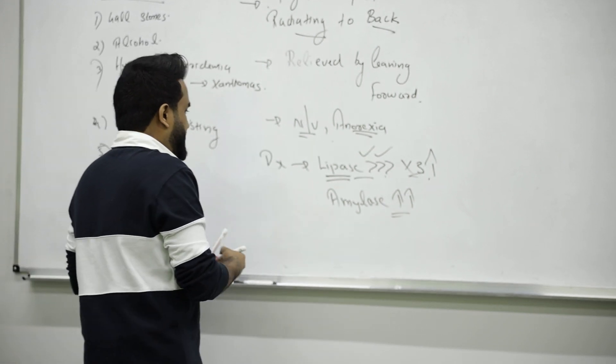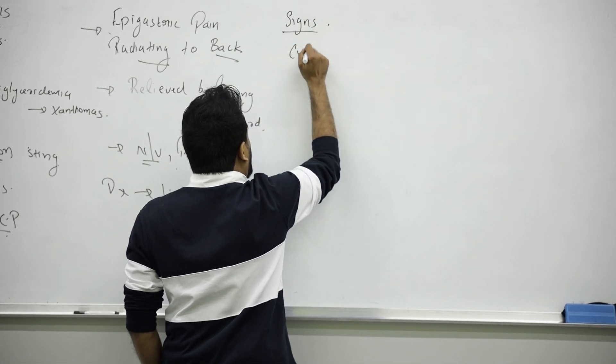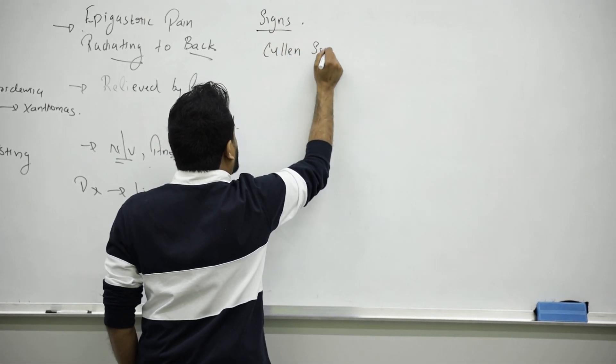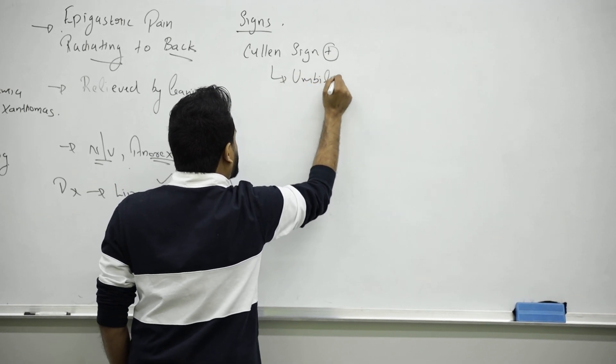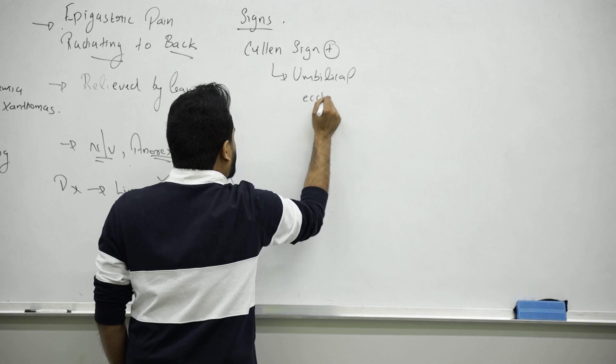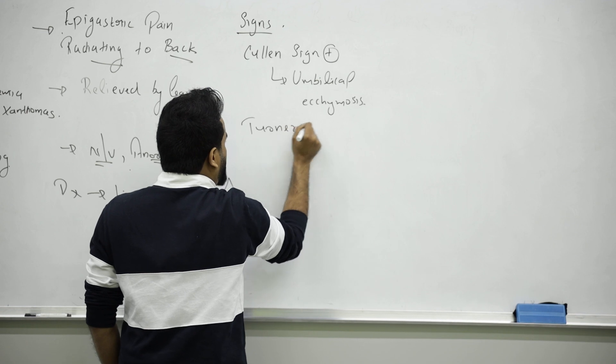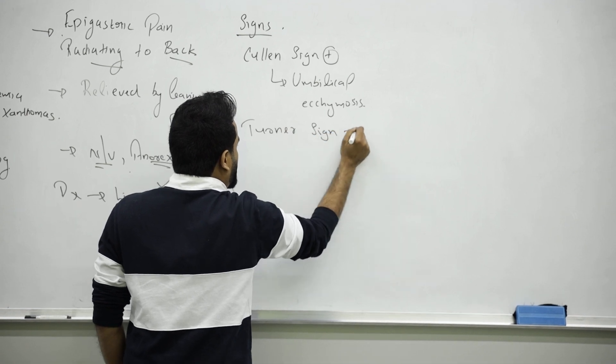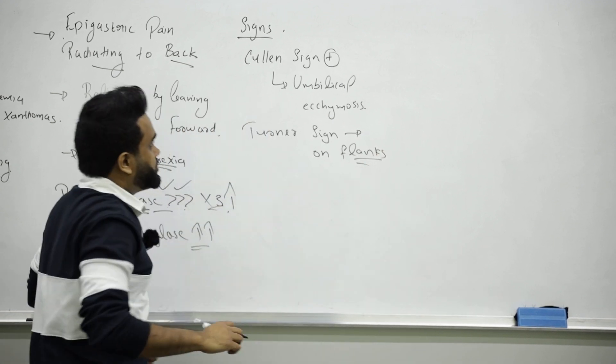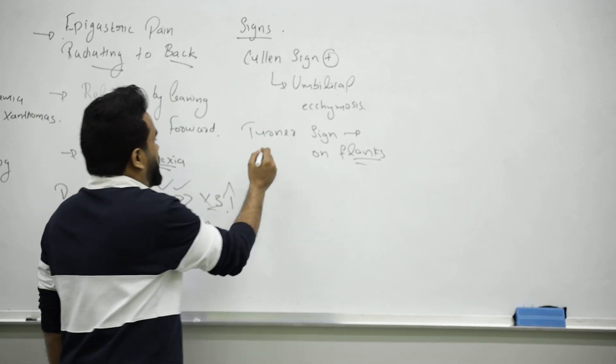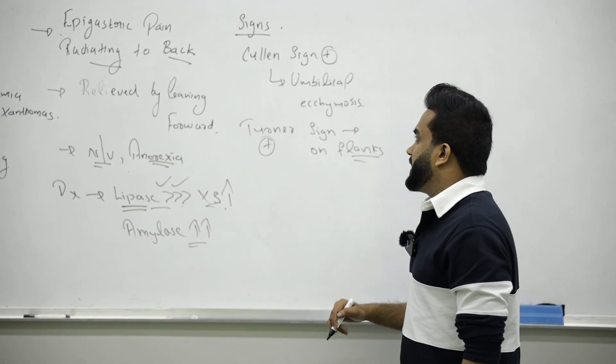Now there are some signs that will be positive for pancreatitis. One is called Cullen sign, where you will see umbilical ecchymosis in the umbilical area. If you see the same thing on the flank, we call it Turner sign on the flanks, two sides of abdomen.